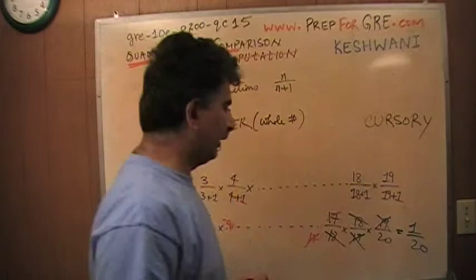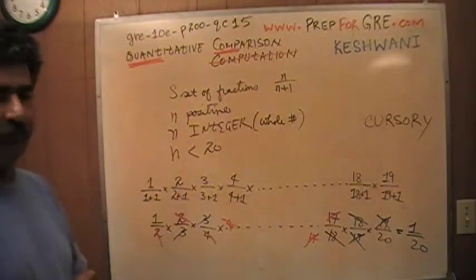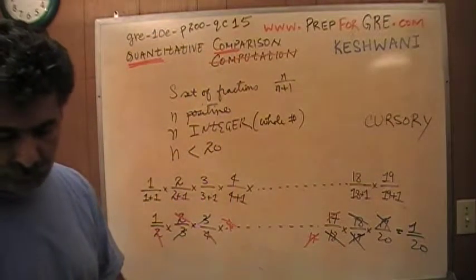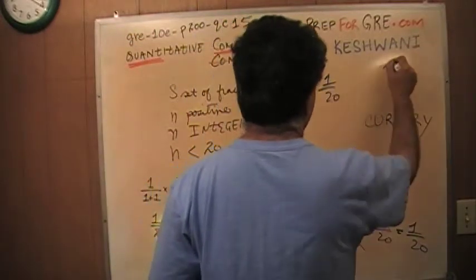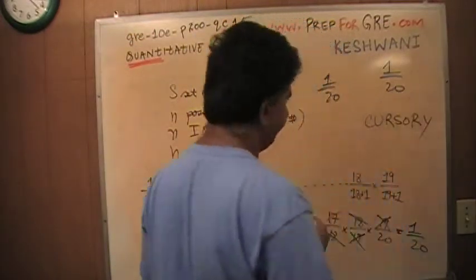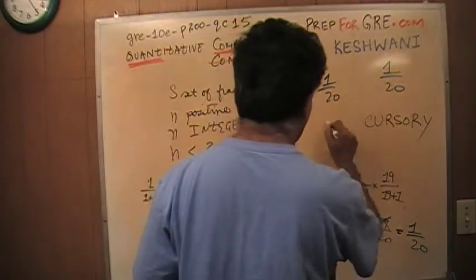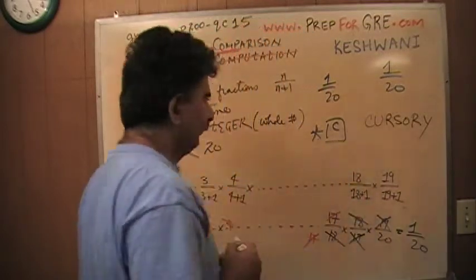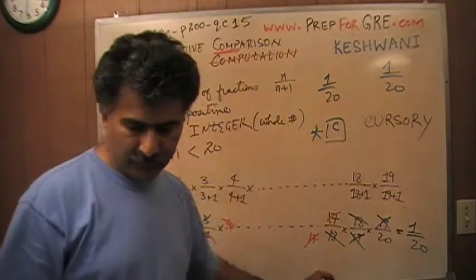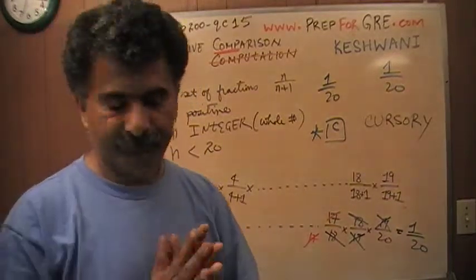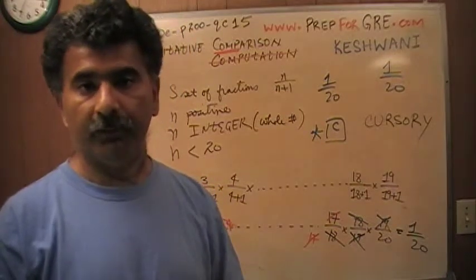That's it. That's the product of all of these fractions. So we have 1 over 20 in the first column. And we have 1 over 20 in the second column. These two are equal. These quantities are equal. 1 over 20 and 1 over 20. The two quantities are equal. The answer is C. And that's all. That's all it was.